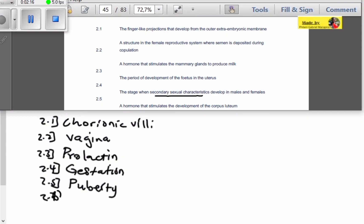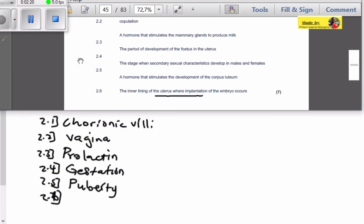And then 2.6. A hormone that stimulates the development of the corpus luteum. Remember that the corpus luteum, before it became the corpus luteum, starts as the graafian follicle.